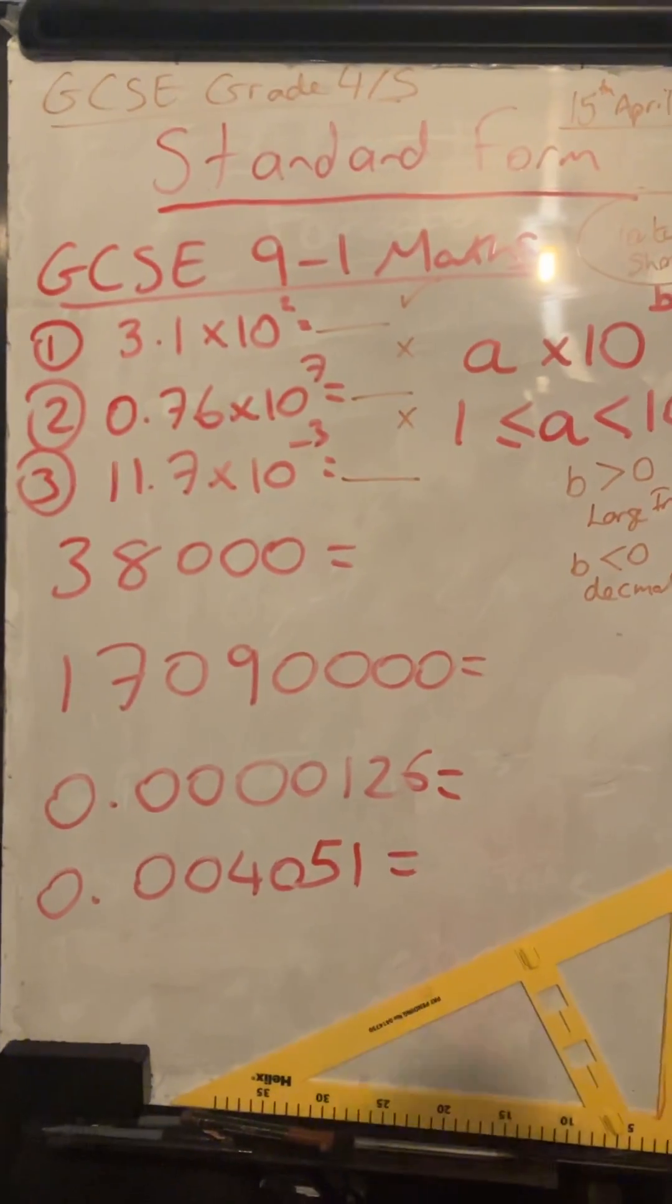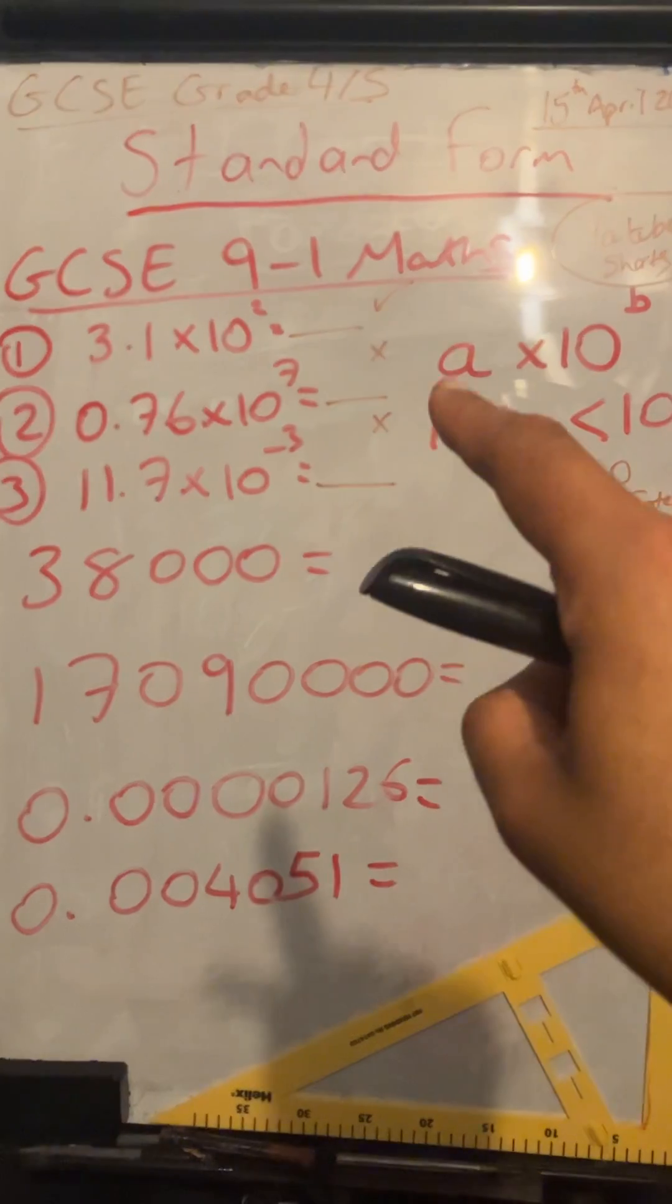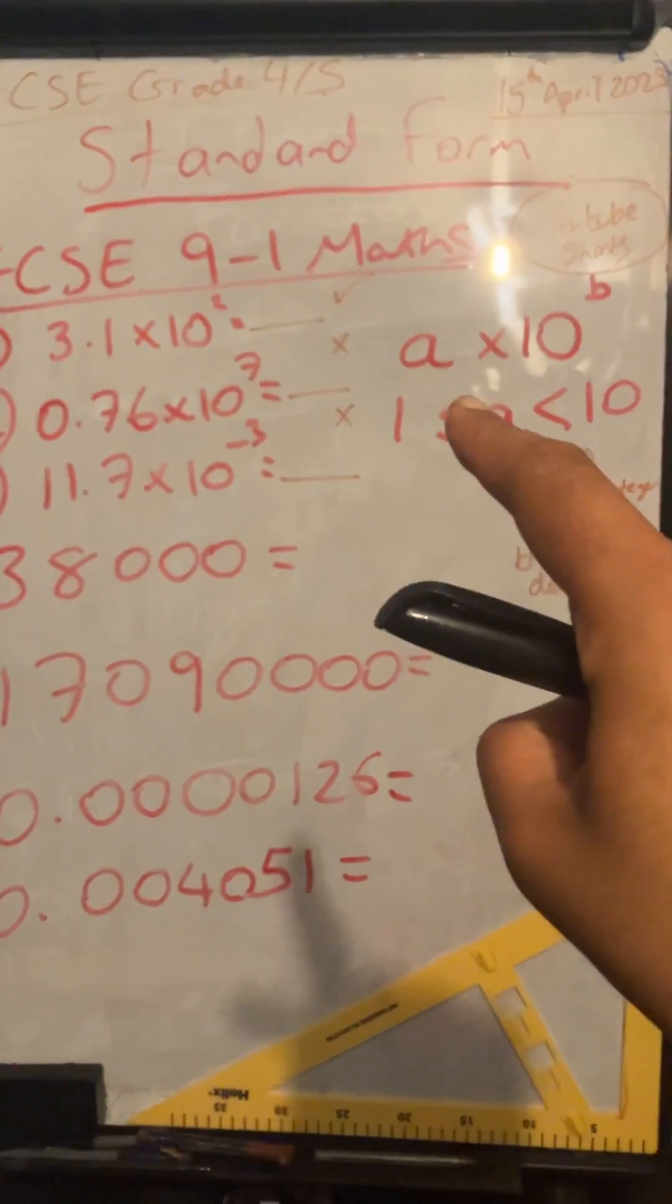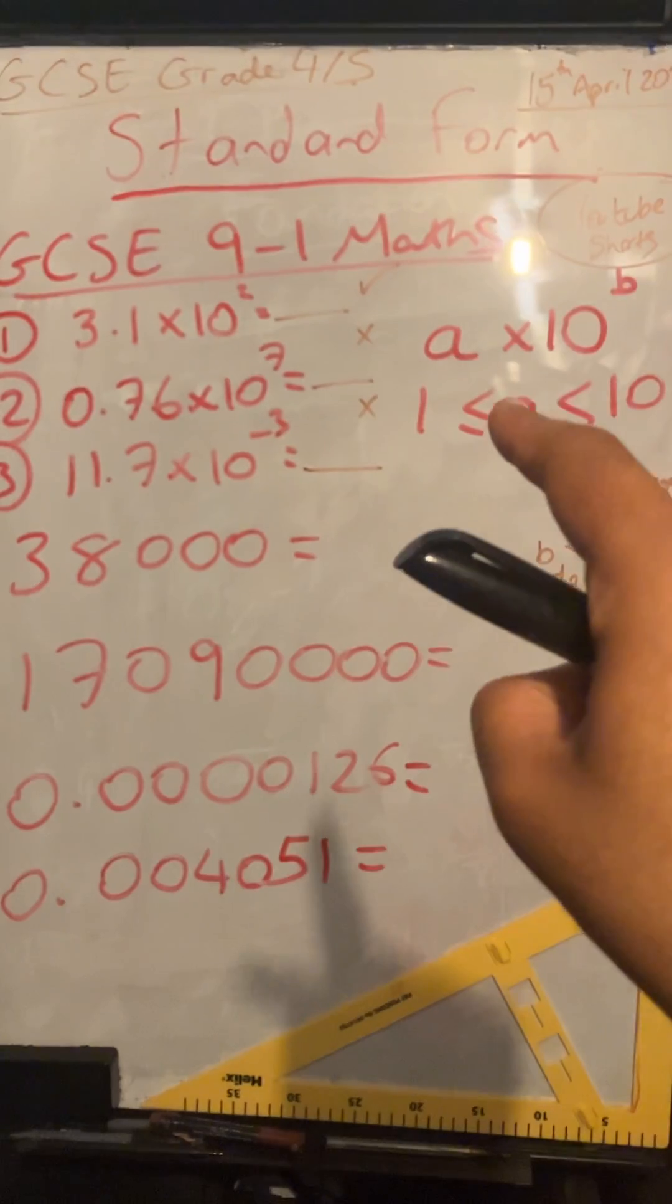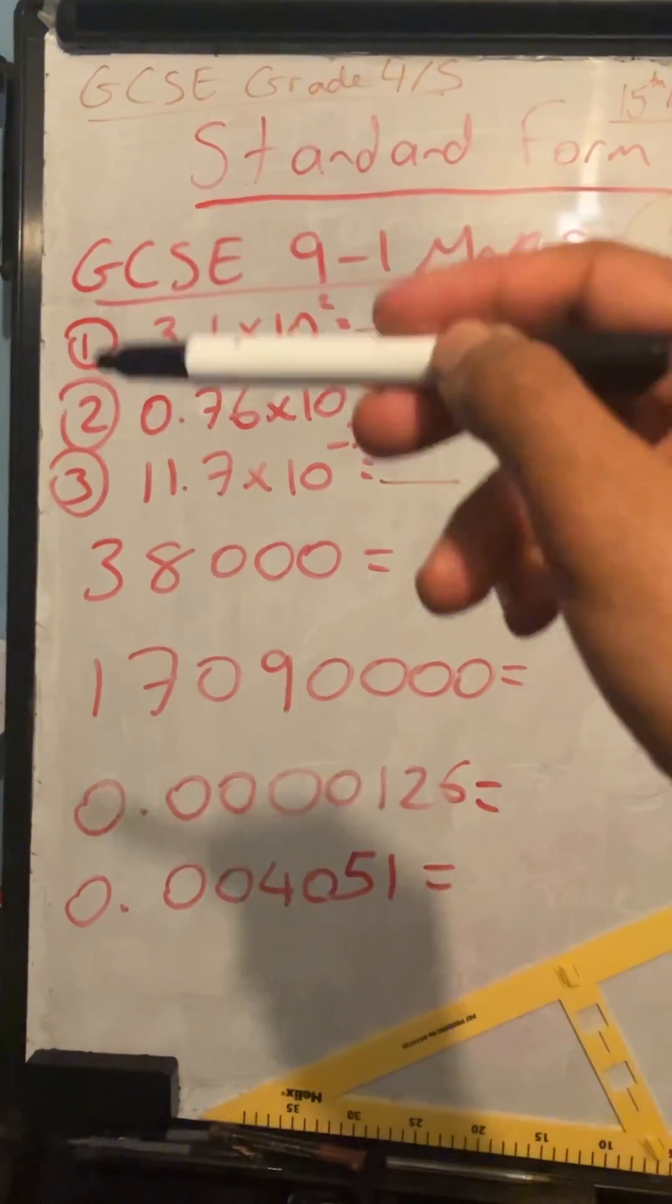Standard form is all to do with writing really small numbers and really big numbers in the form a times 10 to the b, where a is between 1 and 10, so greater than or equal to 1, less than 10.